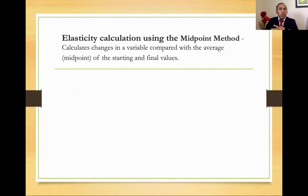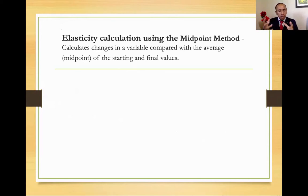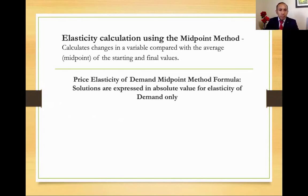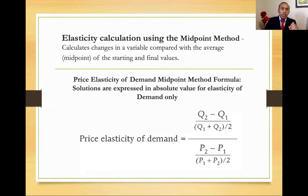Elasticity can be calculated using the midpoint method. We're going to calculate elasticity with the average midpoint of the starting and final values. We can use two formulas: the midpoint method and also a regular method. For the purpose of this class, we're going to use the midpoint method. The price elasticity of demand midpoint method formula is a little extensive, and all solutions for elasticity of demand are expressed in absolute value. We're looking at the formula: price elasticity of demand equals the changes in quantities — the new quantity versus the original quantity — divided by the average value of quantities divided by 2.